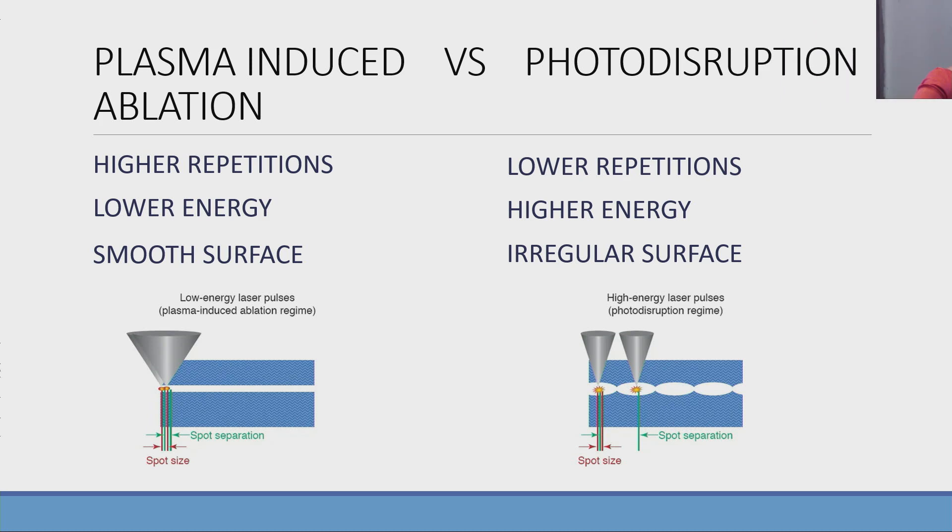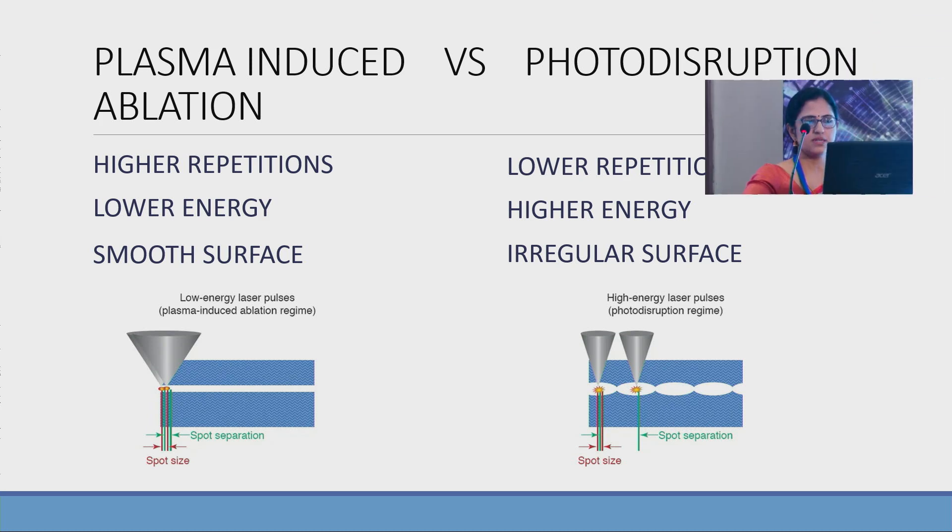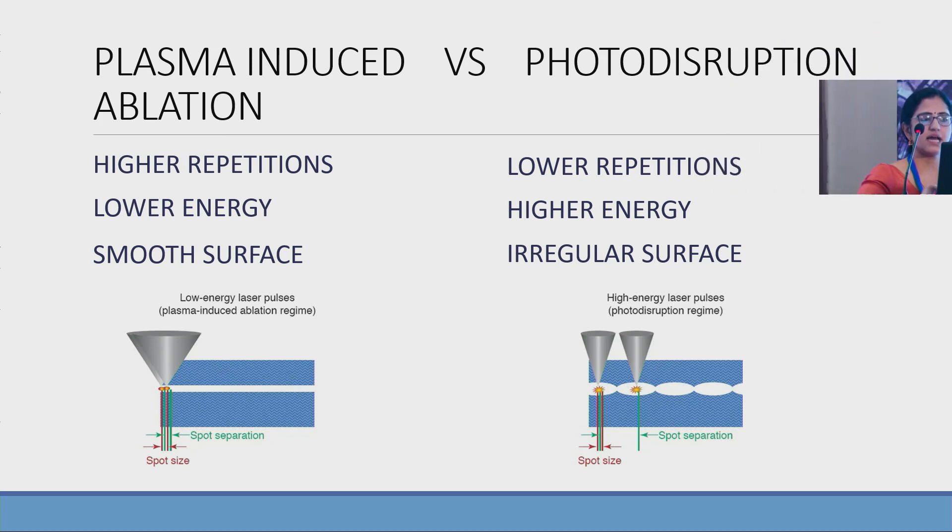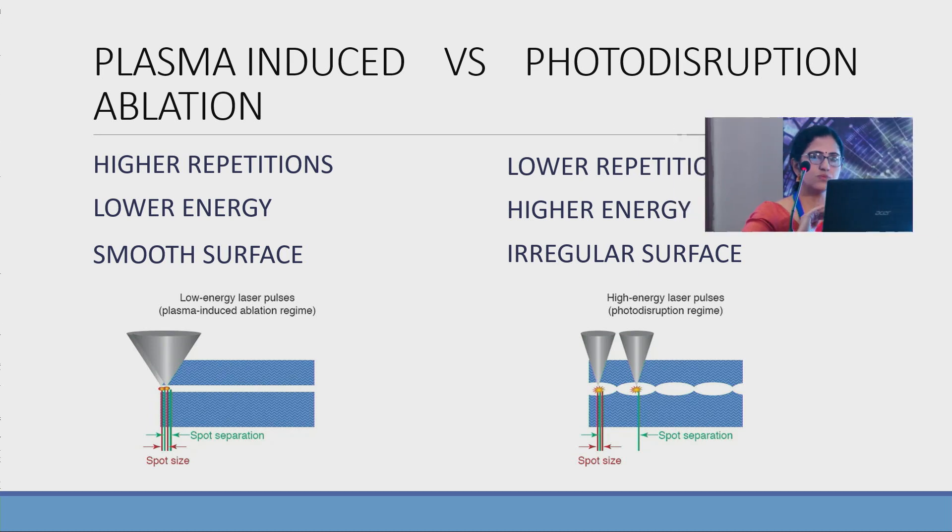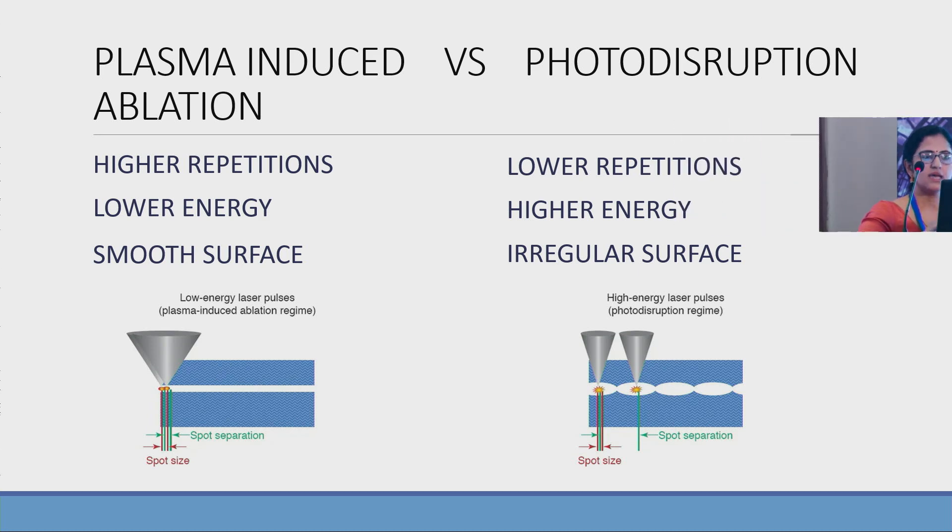The difference between plasma induced ablation and photodisruption: in plasma induced ablation we get higher repetitions and lower energies used. So we get a smooth surface. The interface will be smooth. Whereas in photodisruption we have lower repetition with higher energy. So the interface will not be as smooth.